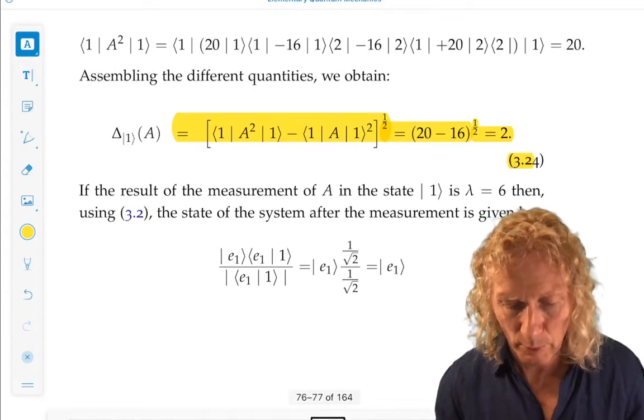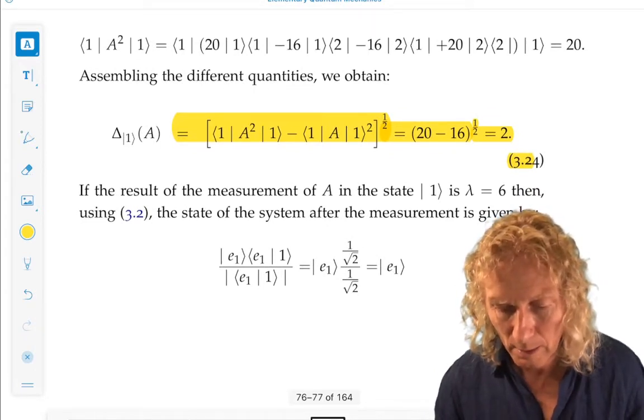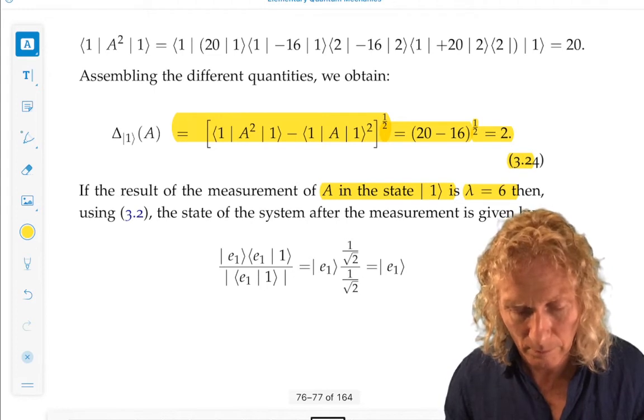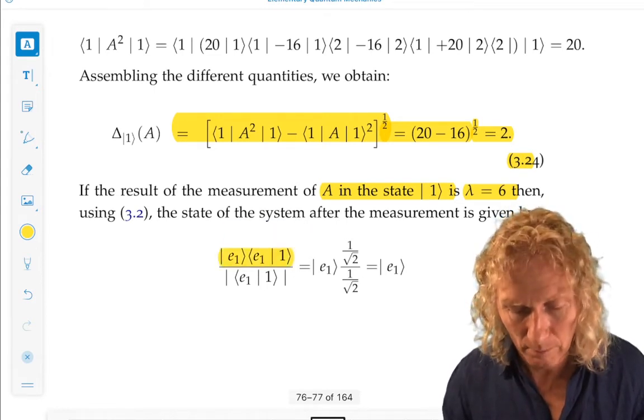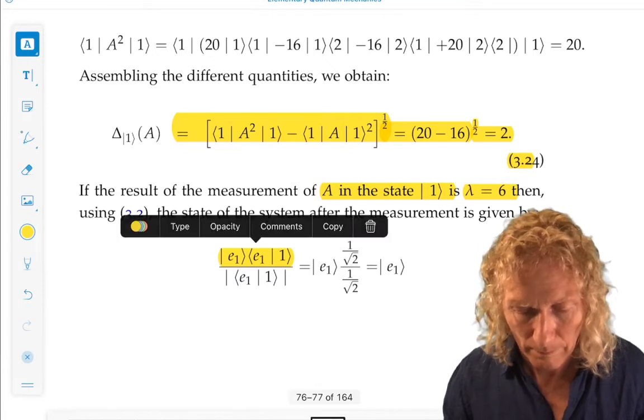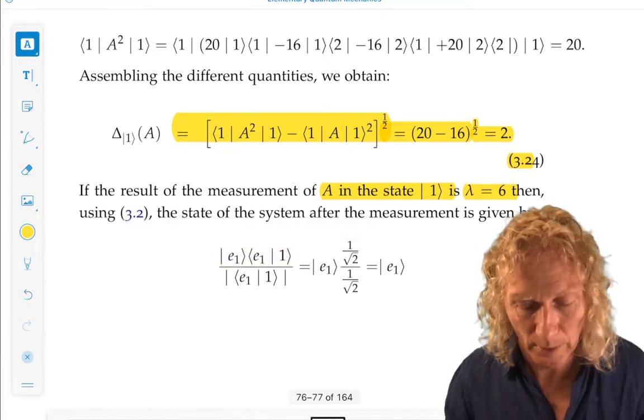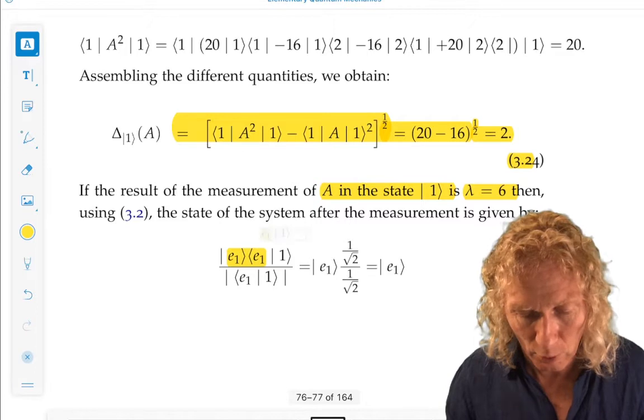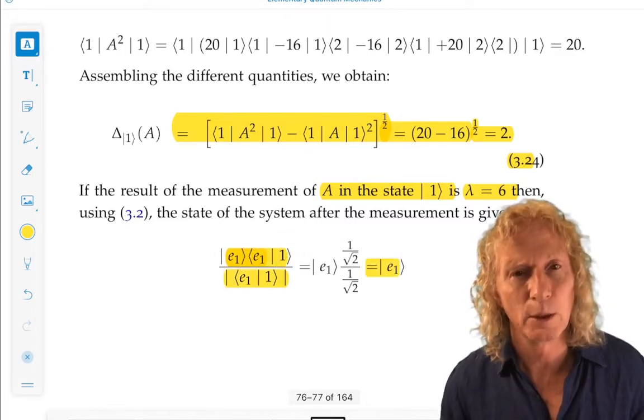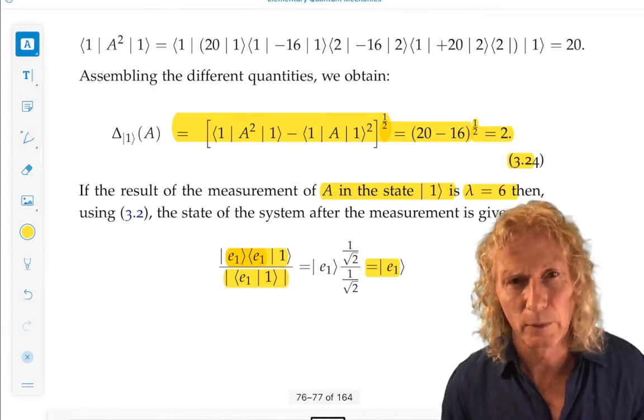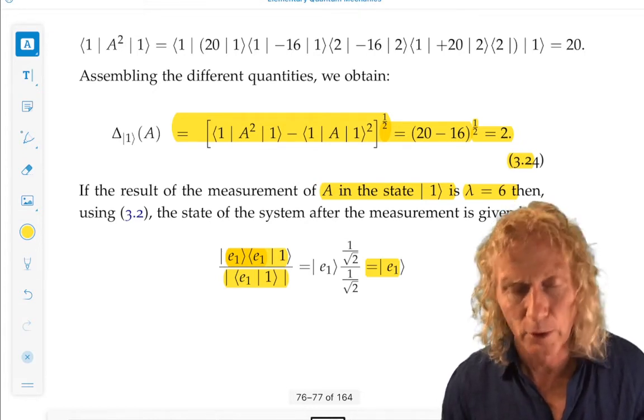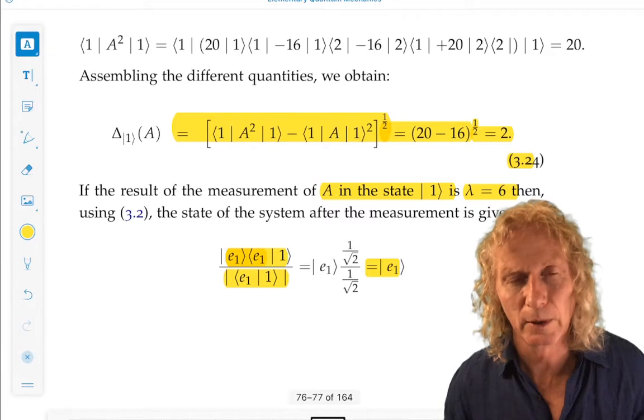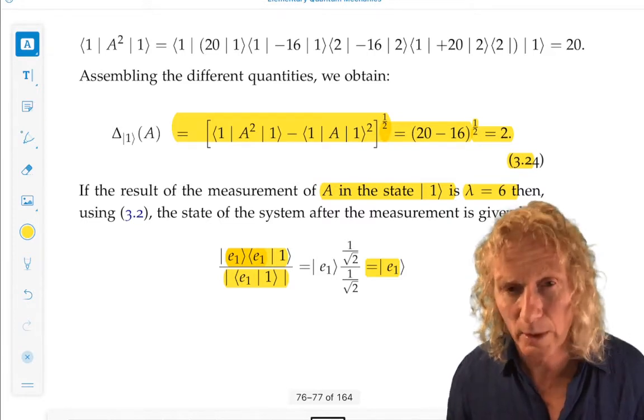So, suppose we measure A in the state 1, and the outcome is 6. It's got to be an eigenvalue. What is the state after measurement? Take the orthogonal projector onto the eigenspace corresponding to λ = 6. Let it act on the state in which the measurement is made. Normalize it, and you get E1. So, the state starts off in ket 1. You measure the eigenvalue corresponding to λ = 6 with eigenvector ket E1, and that's what you get after measurement.